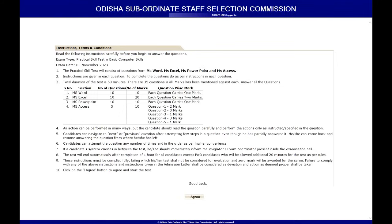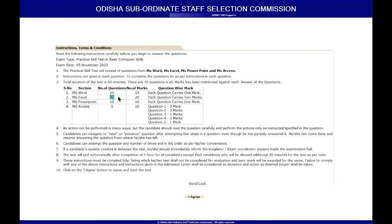The exam has four subjects: MS Word, MS Excel, MS PowerPoint, and Access. To complete all four, you require 60 minutes — one hour — and there are 35 questions overall distributed among the sections. For MS Word, there are 10 questions, each carrying 1 mark, totaling 10 marks. For Excel, there are 10 questions each carrying 2 marks, so 20 marks. Overall, there are 50 marks for 35 questions to be answered in 60 minutes.